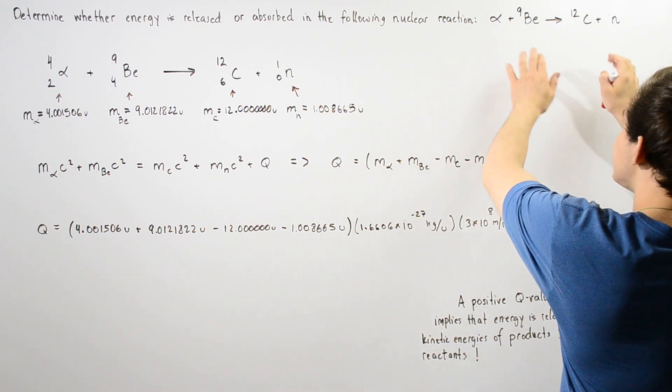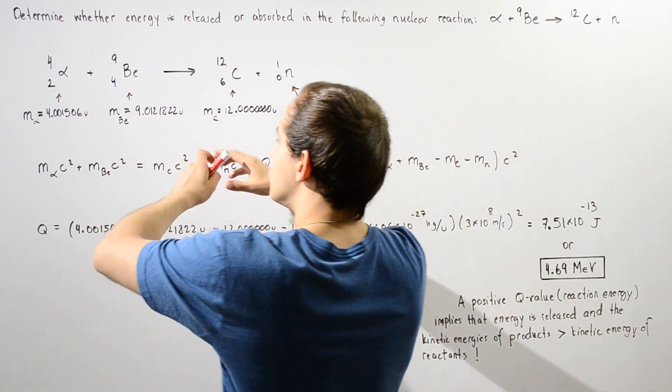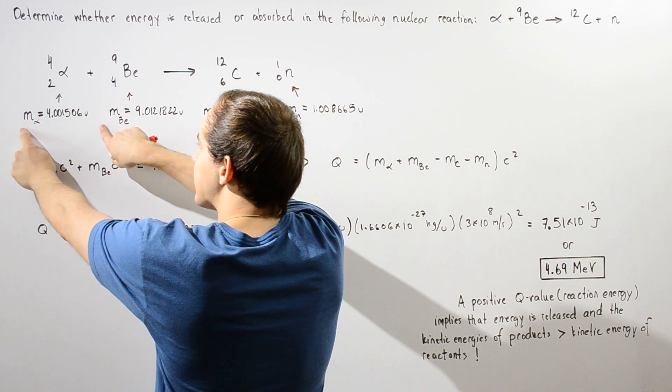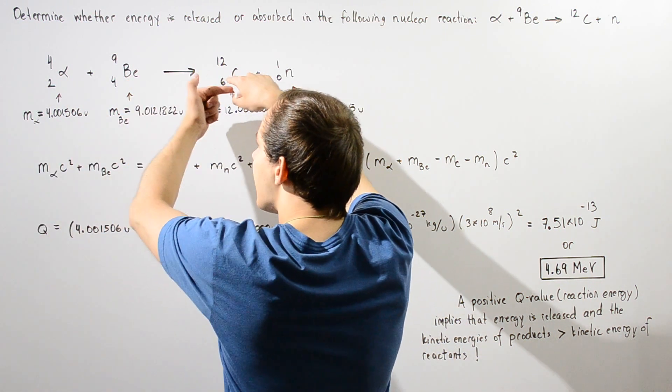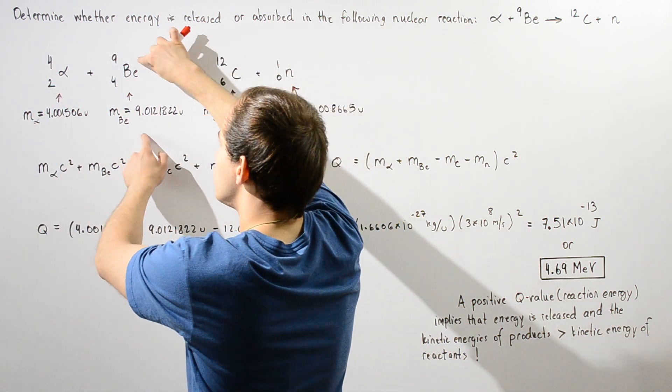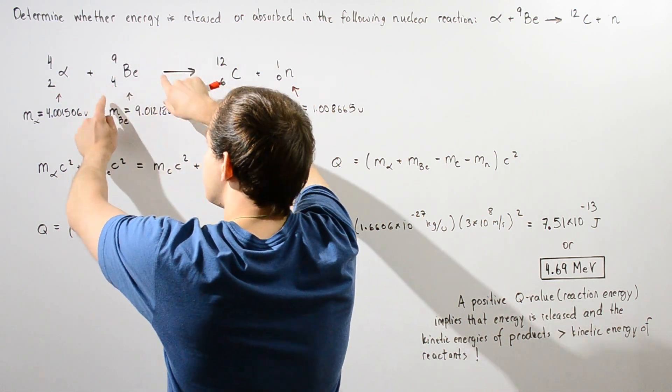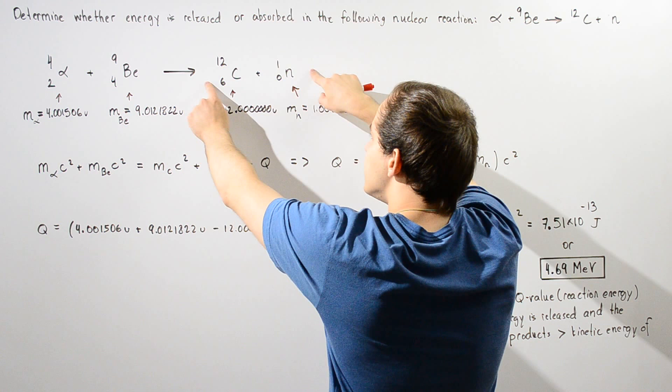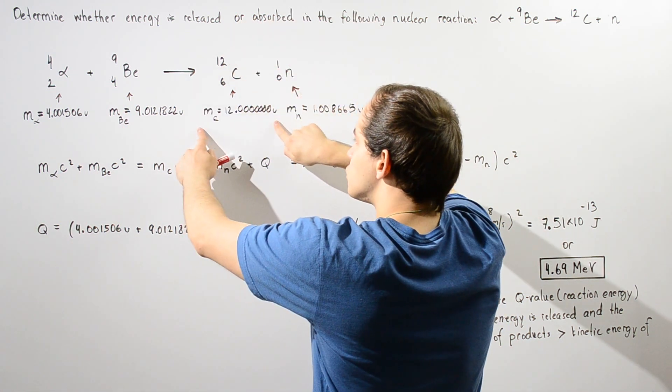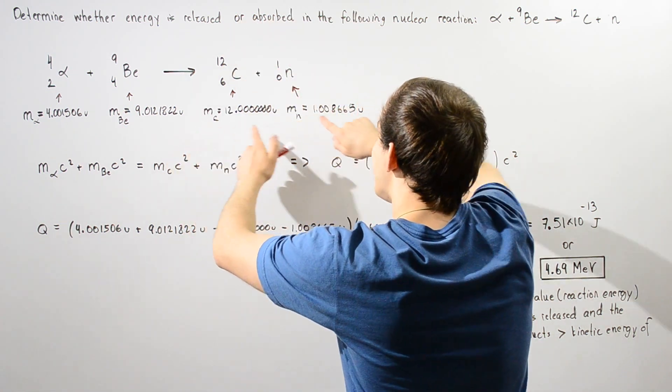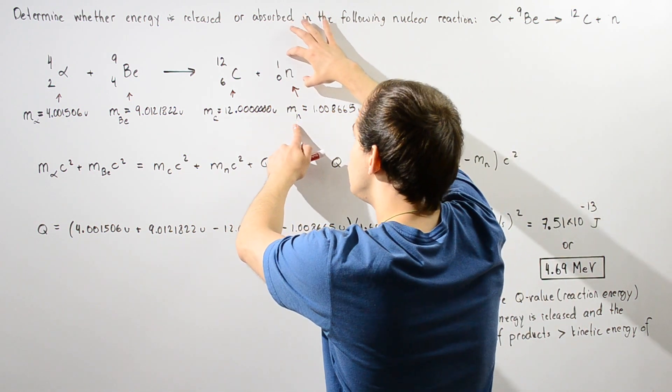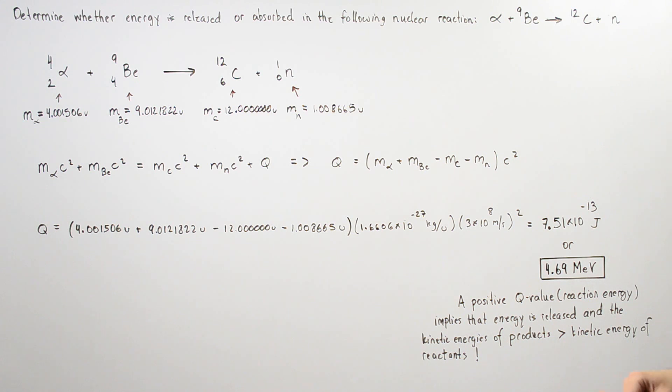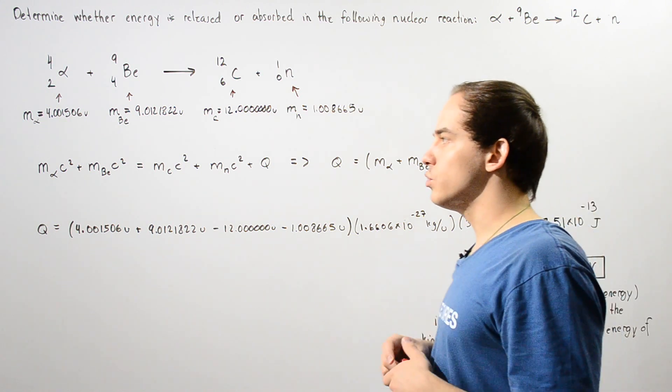Let's rewrite our reaction in the following way. We have our alpha particle that has a mass given by this quantity colliding into the nucleus of the beryllium atom, which has a mass given by this quantity. That forms our carbon-12 isotope and releases a neutron, which has a mass of 1.008665 unified atomic mass units.